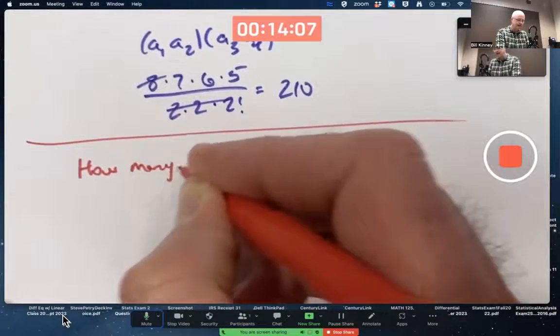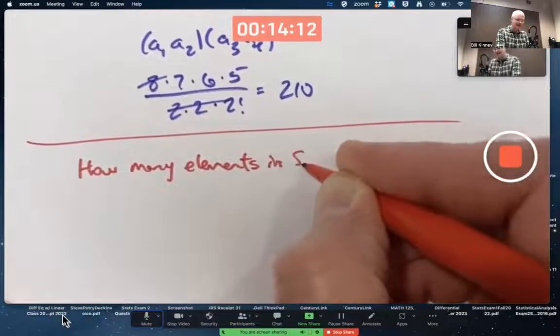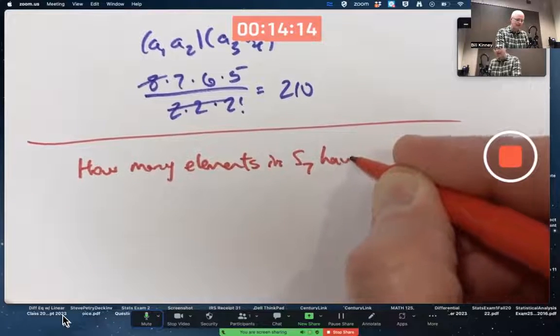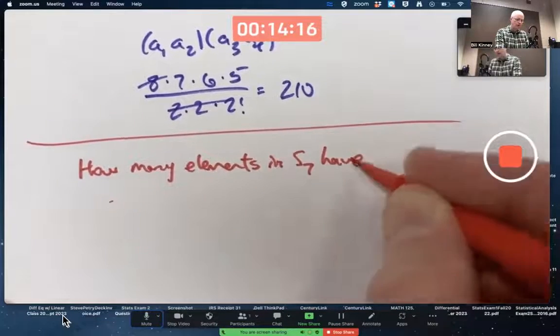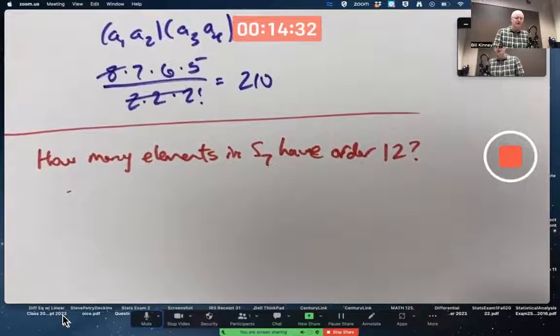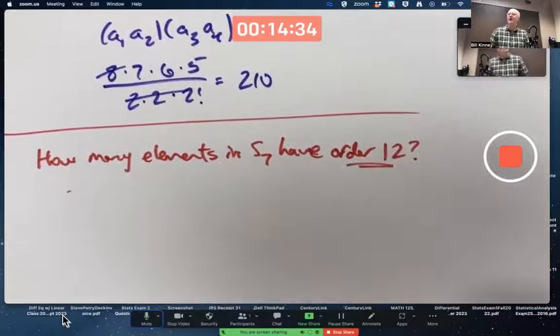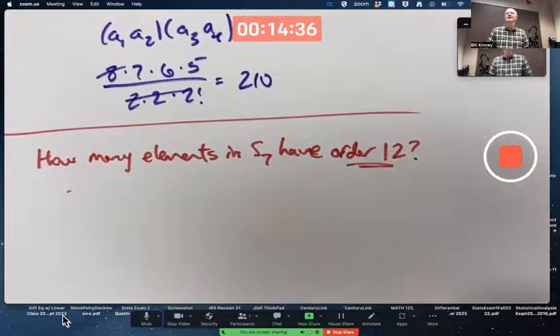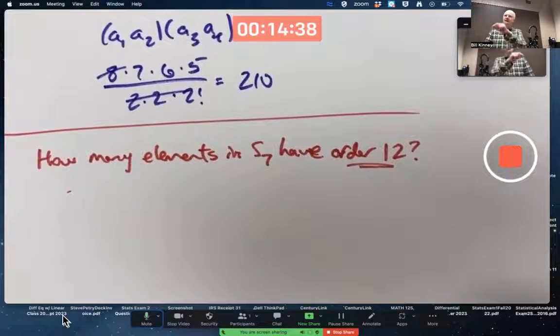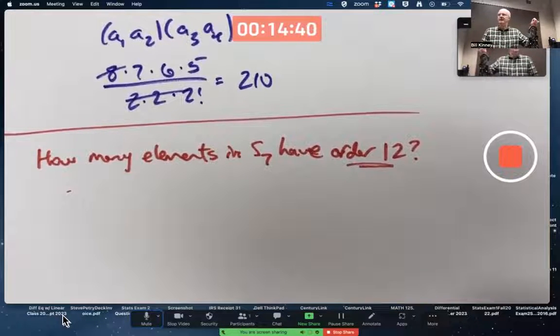How many elements in S7 have order 12? How could you possibly get an element of order 12? You could get an element of order 12 if you had a cycle of length 12.